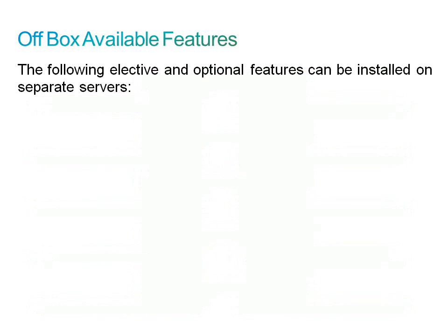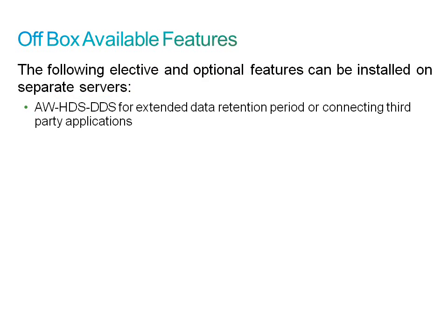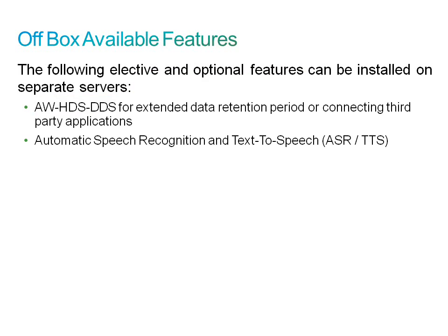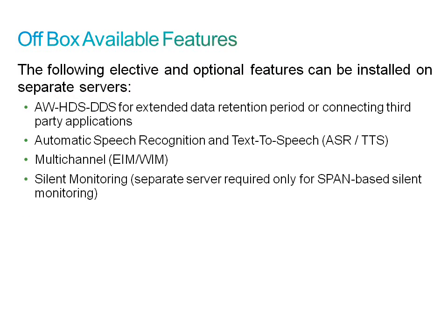The following features are also available but must be run off-box. For extended data retention periods or connecting to third-party applications, AW, HDS, and DDS must be installed off-box. Additional off-box features include automatic speech recognition and text-to-speech; multi-channel email interaction manager and web interaction manager; CTI OS silent monitoring; and social miner and CRM integration, which can be integrated via Finesse Gadgets, Finesse APIs, or one of the existing CRM connectors.